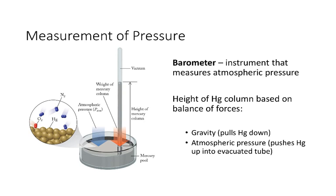So what is atmospheric pressure? It's defined as the pressure exerted by the atoms and molecules of Earth's atmosphere. The numerical value of atmospheric pressure can vary depending on things like location, whether you're at sea level or above sea level, temperature, and even weather conditions.